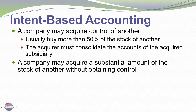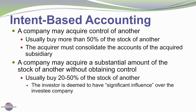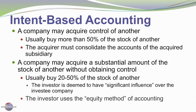A company may simply acquire a substantial amount of the stock of another company without obtaining control. This usually happens when a company buys 20 to 50% of the stock of another company. Investors thereby gain significant influence over the investee company. In that case, the investor is going to use the equity method of accounting, which we'll look at in a subsequent module.